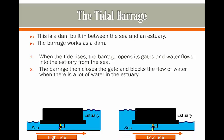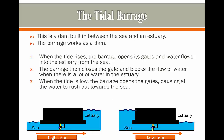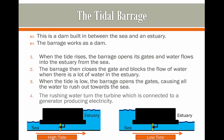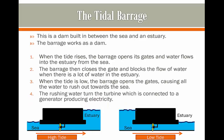Then, when there's a low tide, we release all of that water. The water is sent back into the sea — the levels in the sea rise again and the levels in the estuary fall. This causes the water to rush out towards the sea all in one go, which turns a turbine connected to a generator, producing electricity below the barrage.